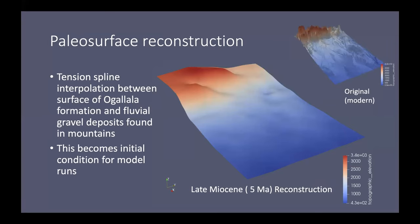So for our paleo surface reconstruction, what I've done is interpolate between the Ogallala formation where it is well preserved on the plains and sparse patches of fluvial gravels that are found within the mountains. What the presence of those gravels in the mountains suggests is that at the time of Ogallala deposition, the sedimentary systems were much more continuous. So we graded from high elevations in the west to low elevations in the east much more smoothly than we do today. And so when we do this interpolation between the gravels and the Ogallala formation, the surface that we can reconstruct supports that hypothesis. And so this surface that you're looking at now will be used as the initial condition for all of our subsequent model runs.